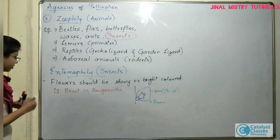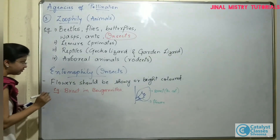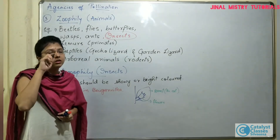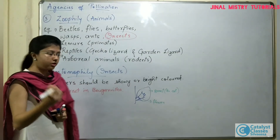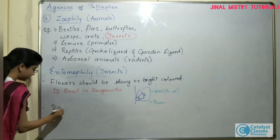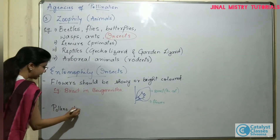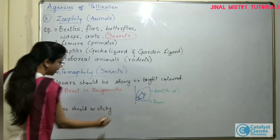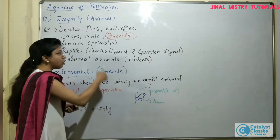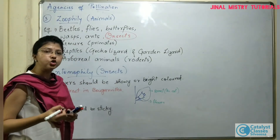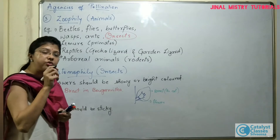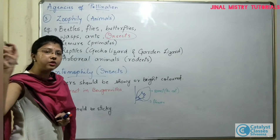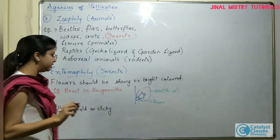The second important characteristic of flowers which are to be pollinated by insects is that the stamens or the anthers, or the pollen grains, should be sticky. So whenever the insects or animals visit the plants or flowers, the pollen grains should directly stick on the body of the animal or insect, and whenever they visit any other flower, the pollen will be delivered there.